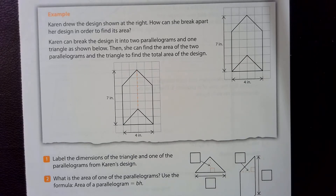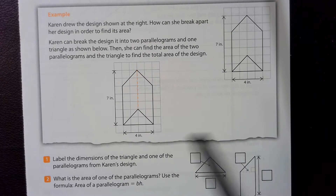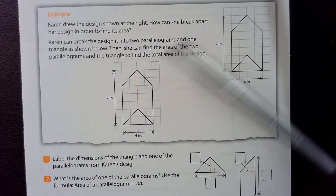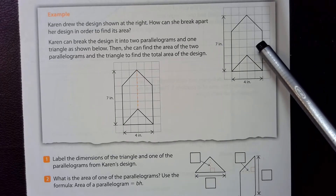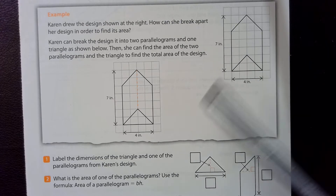Today we're going to be going over the activity that you should have completed September 17th. This is going to be pages 269 to 270 from the orange book, and it's about area of triangles and parallelograms. We'll be working with this example first, where Karen drew a design and has to figure out how to break it apart in order to find its area, because this is not a shape we would normally be able to find the area of.